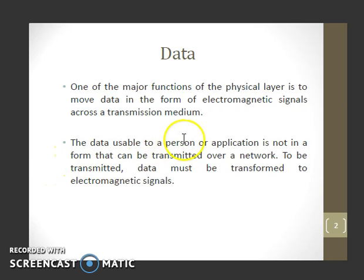The data usable to a person or application is not in a form that can be transmitted over a network. To be transmitted, data must be transformed to electromagnetic signals.